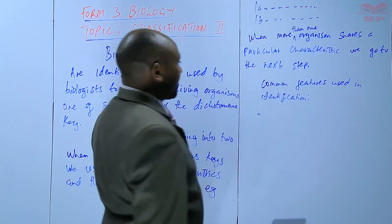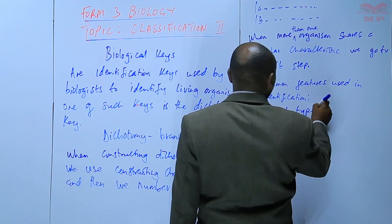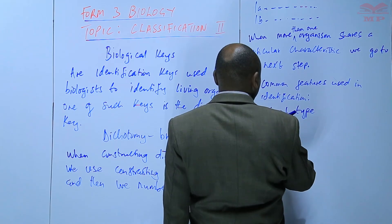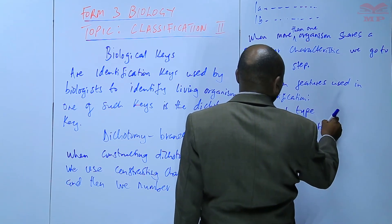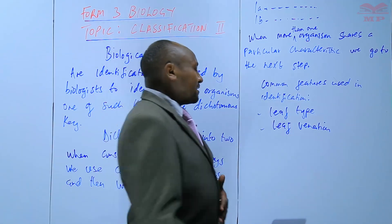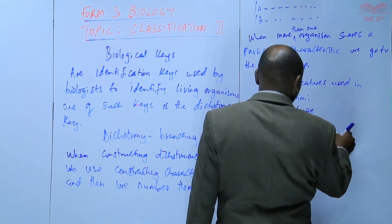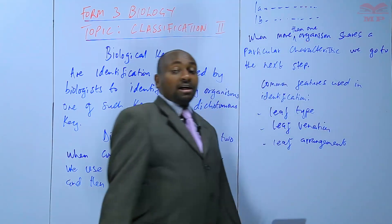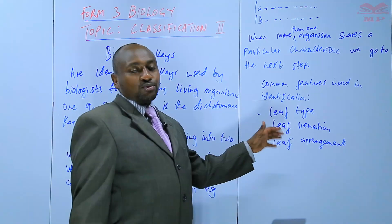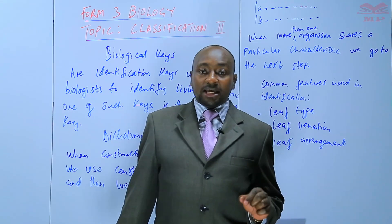It is important to identify some common features used for identification. For example, we use leaf type — whether it is a simple leaf or a compound leaf. We can also use the type of leaf venation: whether the veins are parallel or net-veined. We can also use leaf arrangement — whether it is opposite, alternate, or whorled. These are some common features used with plants. Now let us study the rules for constructing a dichotomous key.